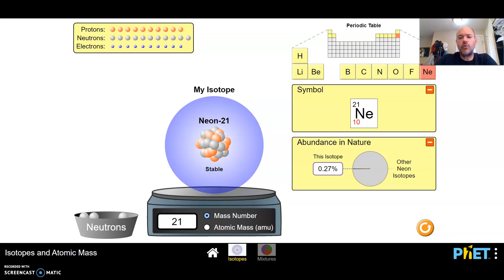Neon 21, 0.27%. So neon 21, again you can look up here and think it's 10 protons, 11 neutrons. Again thinking 10 protons for the atomic number, 21 mass, or 21 minus 10 is 11. So you know the number of neutrons.